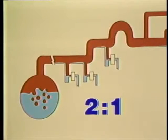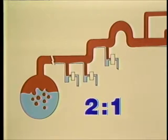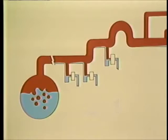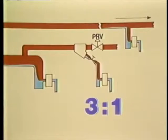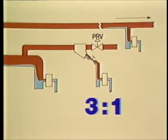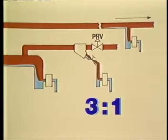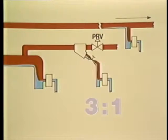Use a 2 to 1 safety factor for drip traps between the boiler and the end of the main. Use a 3 to 1 safety factor for the trap at the end of the main, and for traps ahead of shutoff valves, pressure reducing valves, and temperature control valves.